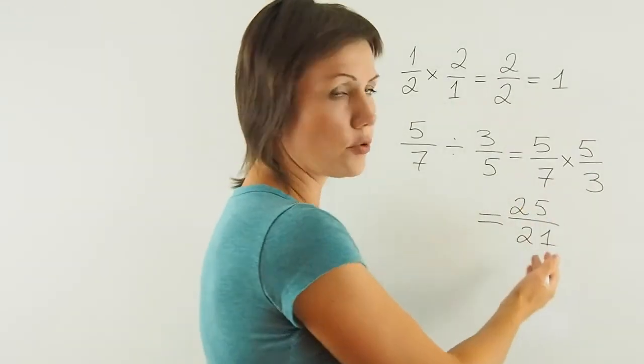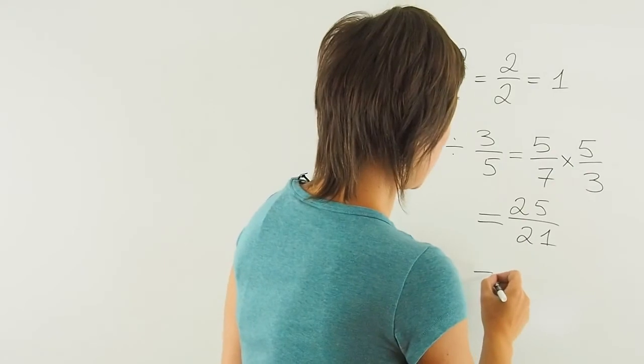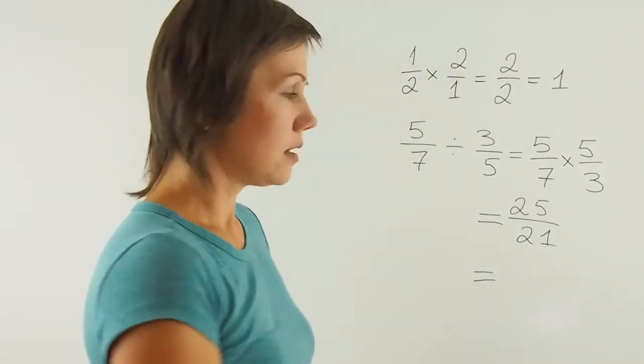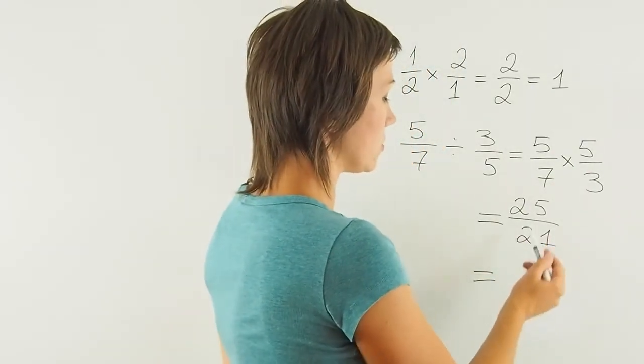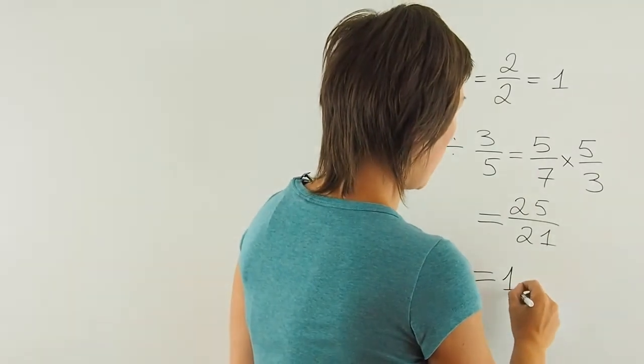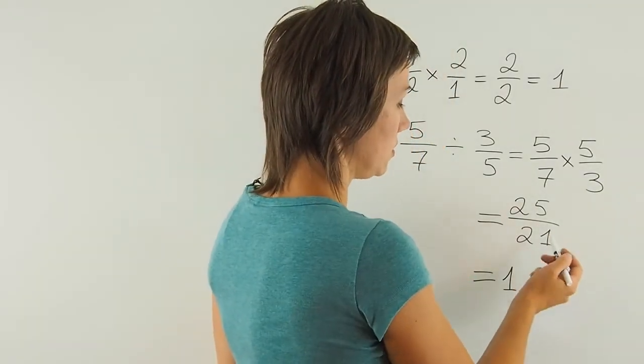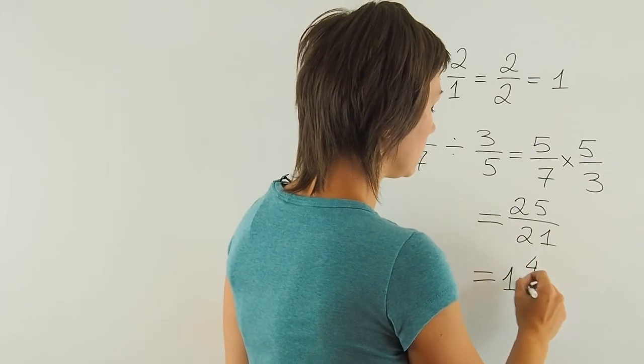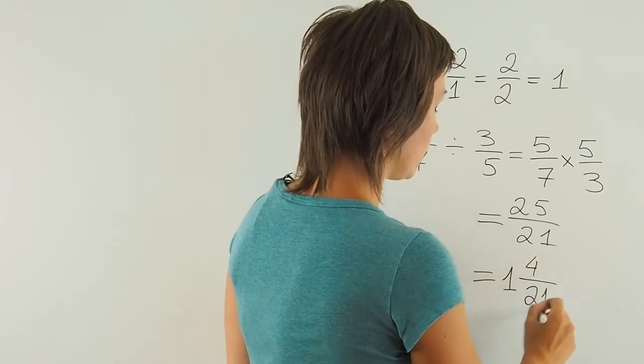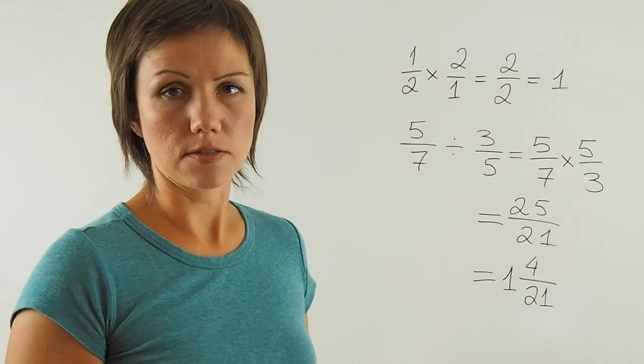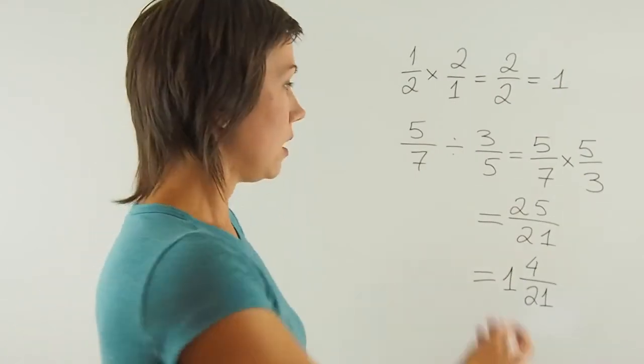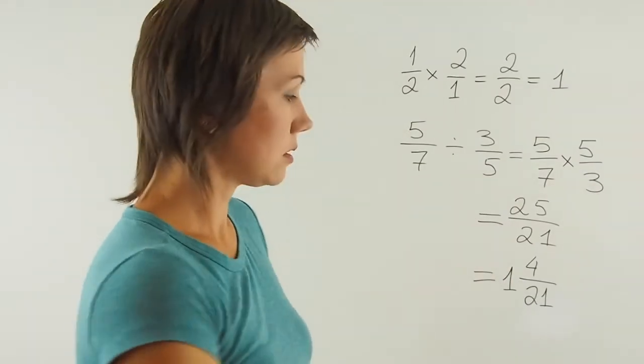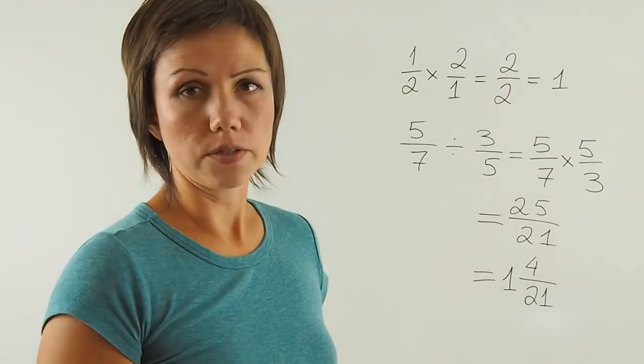And since this is an improper fraction, I will try to find the whole part. How many times 21 goes into 25? Once. And then the difference between 25 and 21 is 4 over 21. So the final answer, the quotient of this expression is 1 and 4 twenty-firsts.